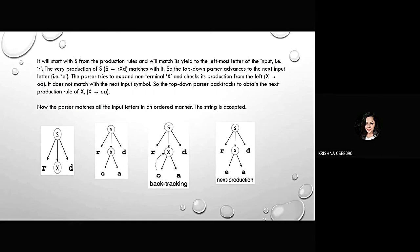It will start with S from the production rules and it will match X to the leftmost letter of the input, that is R. The very production of S, that is F extends to RXT matches with A. So, the top-down parser advances to the next input letter, that is E. The parser tries to expand the non-terminal X and checks its production from the left, that is X extends to OA. And it does not match with the next input symbol. So, the top-down parser backtracks to obtain the next production rule of X, that is X extends to EA. Now, the parser matches all the input letters in an order manner.